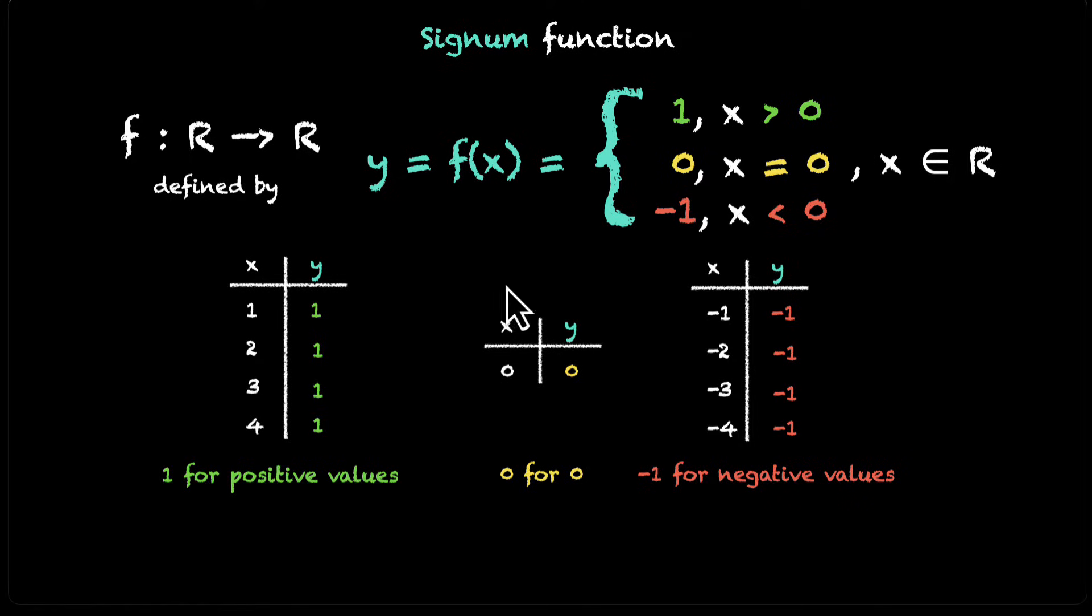Isn't it fascinating? What is this function really doing? Well, this function only cares about the sign of the input. If you put in positive values, you get 1. If you put in negative values, you get minus 1. And if you put in 0, you get 0.